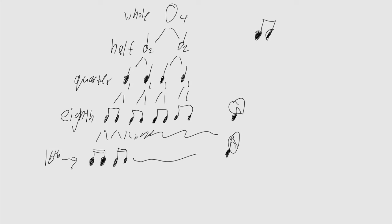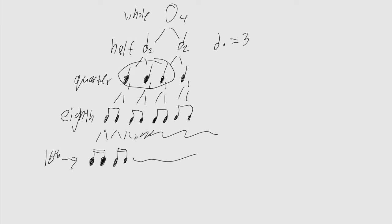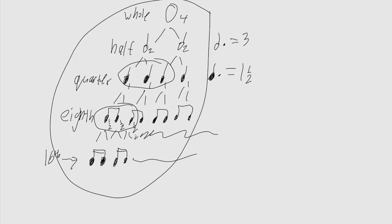You'll notice there are no numbers like three in that system — that's where dotted notes come in. A dot next to a note adds half of that note's value. So a dotted half note equals three beats. A dotted quarter note equals three eighth notes, which gives you one and a half beats. That's how you get the in-between values not covered by straight note divisions.